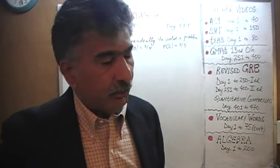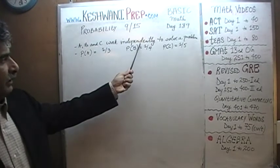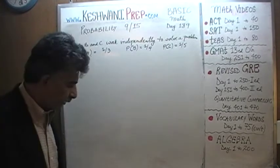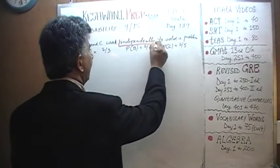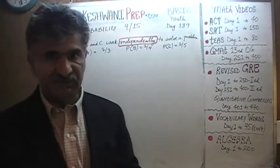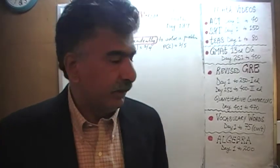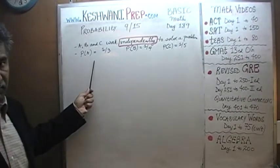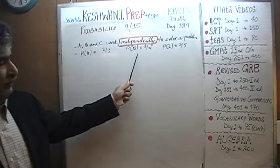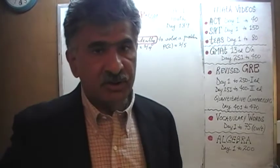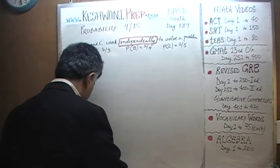The problem for today is already on the blackboard. We are told that we have three actors: A, B, and C. They can work independently to solve the problem. Independently means that the odds of one person being successful or not has absolutely nothing to do with how the other two people perform. We are told that the odds A will be successful is one-third, B is one-fourth, and C has a one-fifth (20%) chance of being successful.